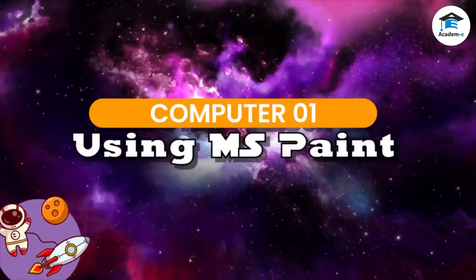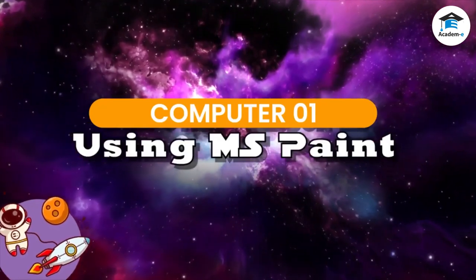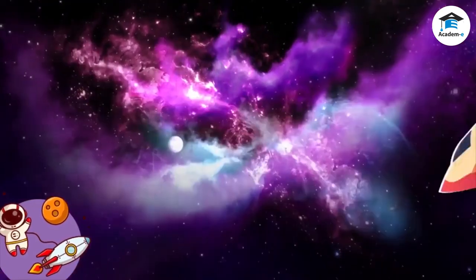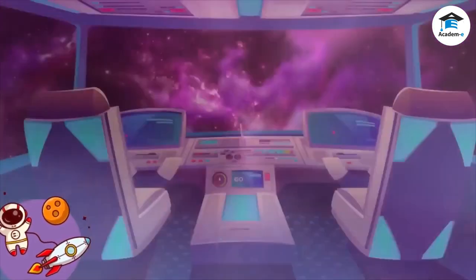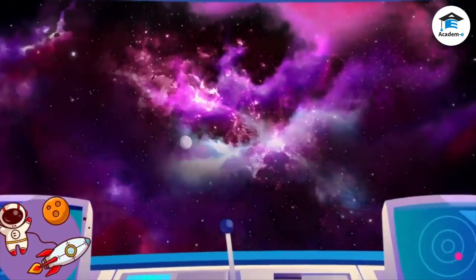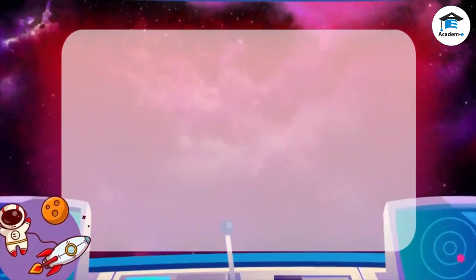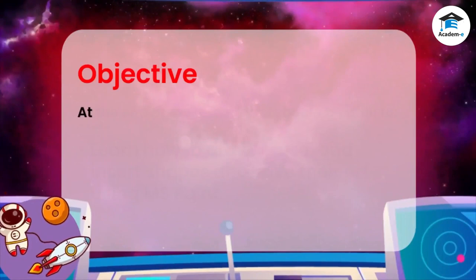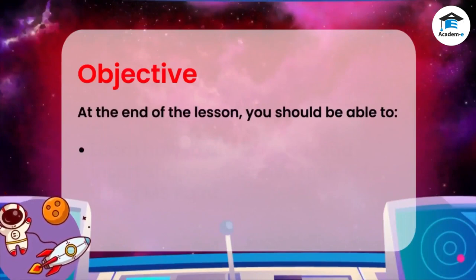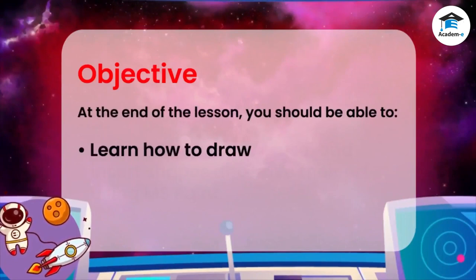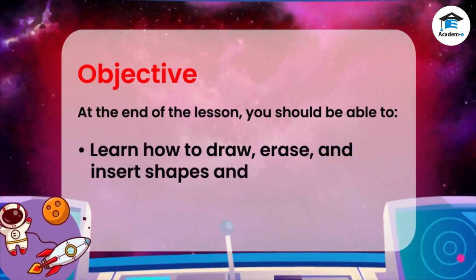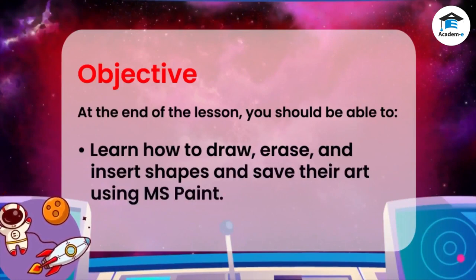Computer 1: Using MS Paint. Objective: At the end of the lesson, you should be able to learn how to draw, erase, and insert shapes, and save their art using MS Paint.